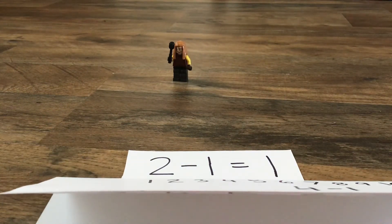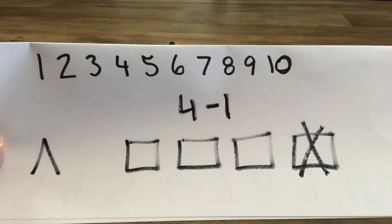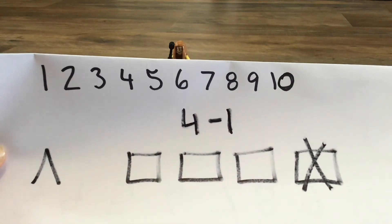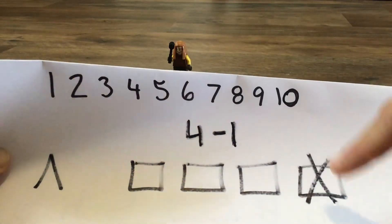So if the problem is four minus one, let me show you with a darker marker. If it's four minus one, this is what your picture would look like. Four squares, one, two, three, four, and you're X-ing one out.